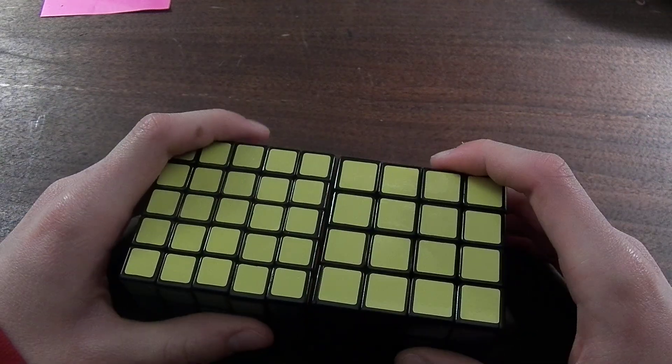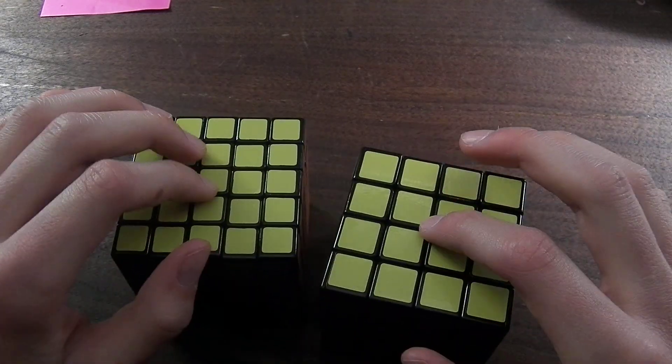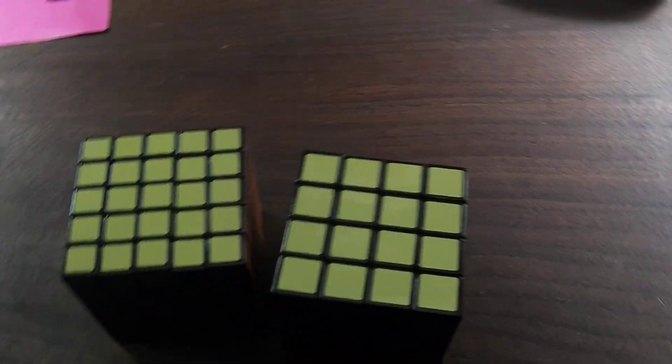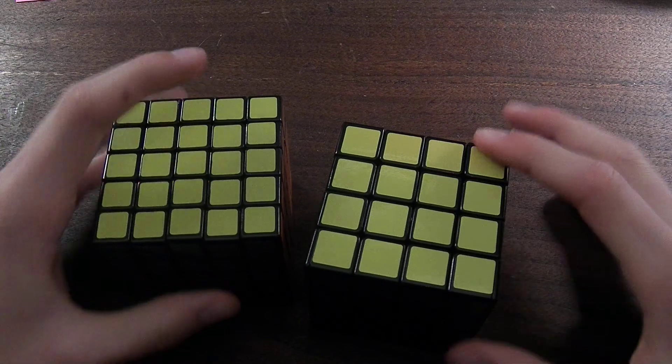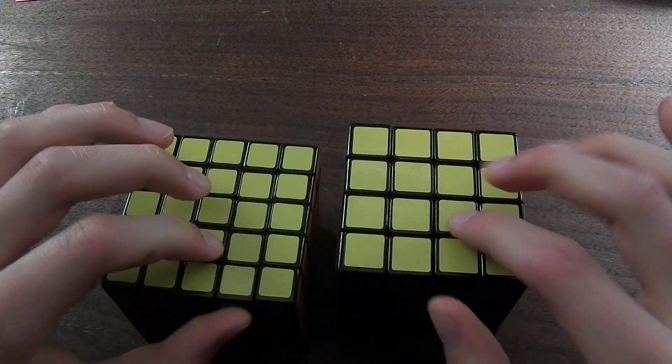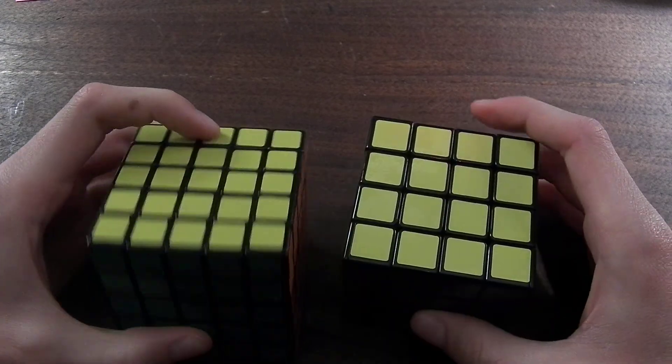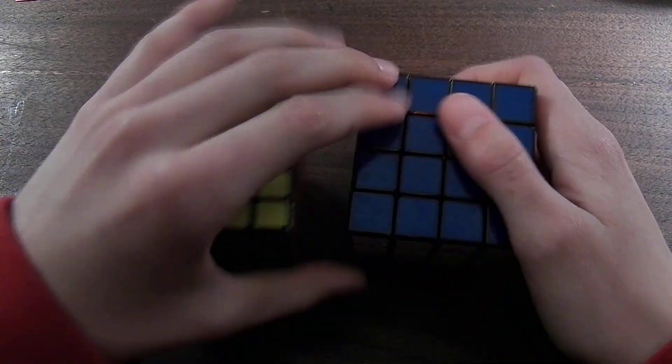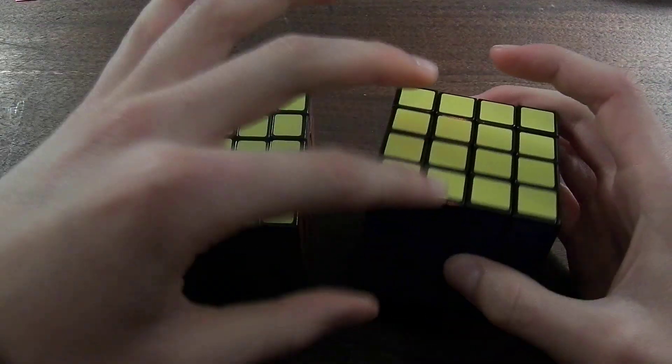Hi everyone, this is going to be my video for a tutorial on how to solve parity on cubes bigger than a 3x3, if you use the reduction method. Reduction method is where you reduce the cube to a 3x3, so this is an edge, this is a corner, all these four are centers, once you reduce it.